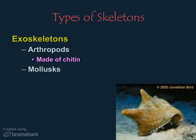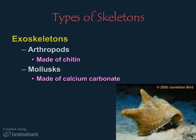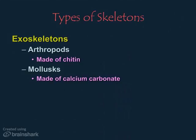Mollusks, like this conch, which is really a giant snail, are mostly shelled animals like clams, scallops, and snails. Animals like squid and octopi are also mollusks with an internal shell. And then there are slugs, which are mollusks with no exoskeleton at all. Mollusk shells are made of another carbon compound, calcium carbonate, often combined with chitin.